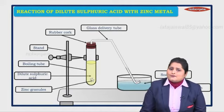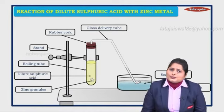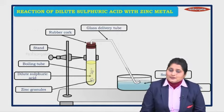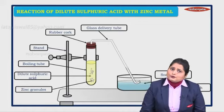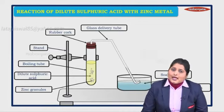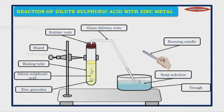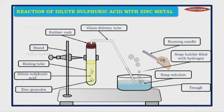As soon as we add dilute sulfuric acid, the reaction takes place and we see the formation of gas bubbles. The gas bubbles come up, travel through the delivery tube, and enter into the soap solution. Just outside it we take a burning candle. The moment the reaction takes place, there is a release of gas — soap bubbles filled with hydrogen gas.